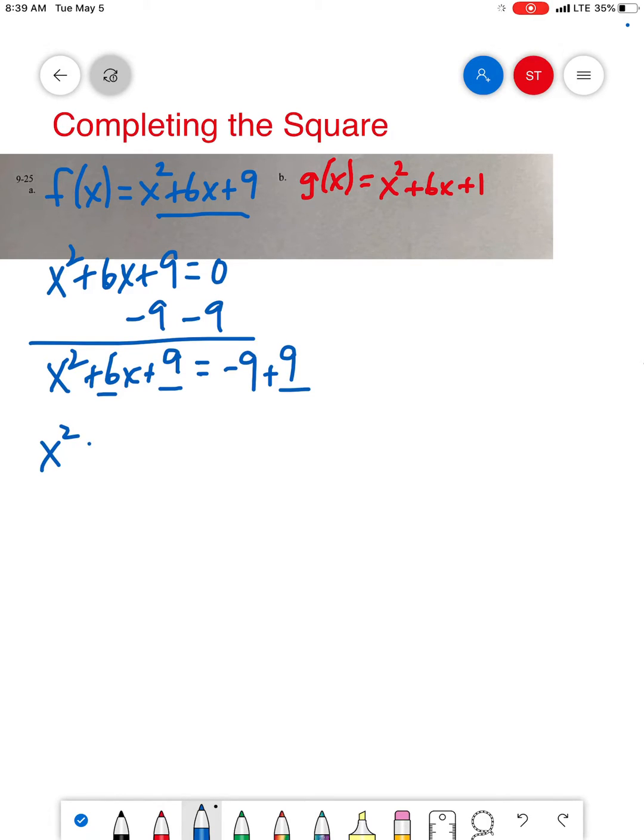So then I have, all you do is bring down the x, bring down the sign, half of 6 is 3, you square it, equals 0. So now there's really nothing, I mean you could subtract 0 on both sides, but that's not gonna do anything. So my function is f of x equals x plus 3 squared.